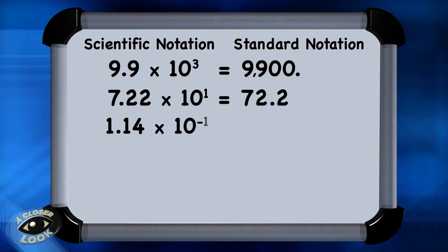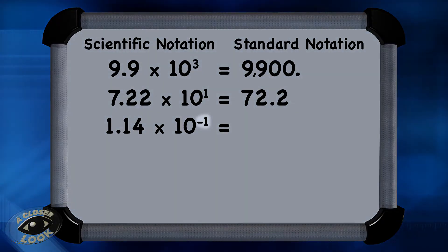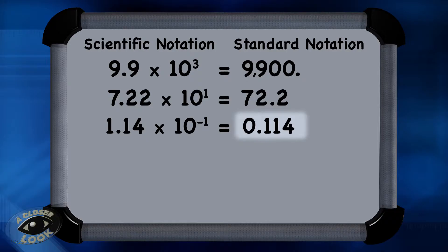Now let's look at 1.14 times 10 to the minus first power. A negative exponent means that the decimal value moves to the left when you convert it to standard notation. There is a negative 1, so slide that decimal to the left one place. And the new value is 0.114.